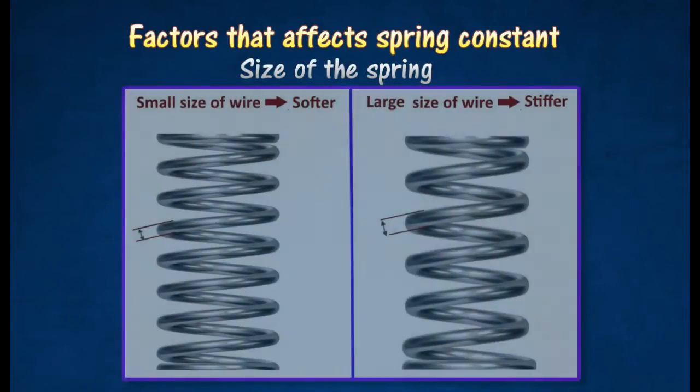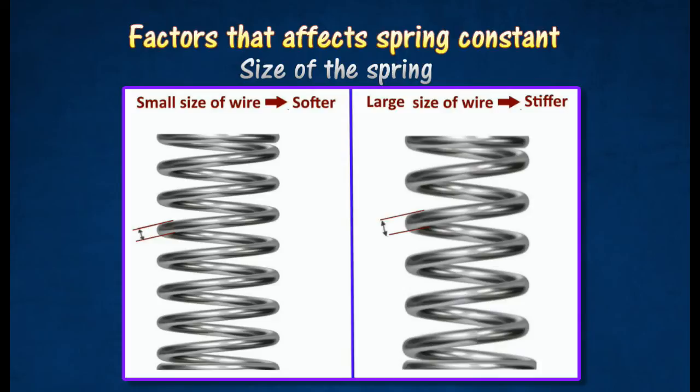The size of a spring refers to the diameter of the wire used to build the spring. Springs that are thinner have a lower spring constant and are thus softer.